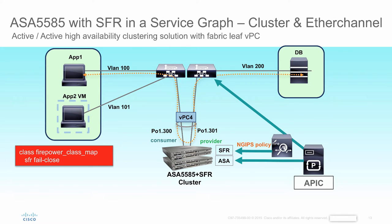Let's look at how we integrate an ASA 5585 cluster with embedded firepower services into a service graph. Here we can leverage an active-active high availability model with ASA clustering and partner it with the fabric leaf virtual port channel feature. Physical and virtual endpoints on the app EPG are redirected as an EPG app into the cluster service node of ASA plus firepower. APIC is configuring the full ASA appliance and also configuring the redirection of that traffic into the firepower module. The firepower sensor is managed by Firesight where the NG IPS policy is pushed onto the sensor and all eventing is received by Firesight and visible to the security team.